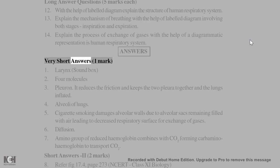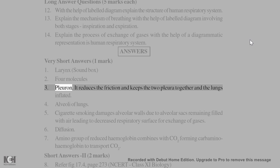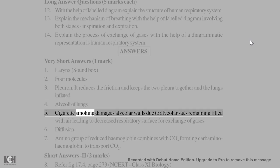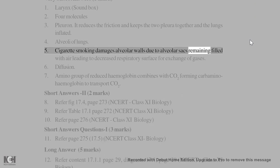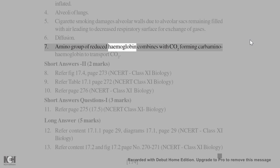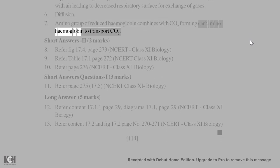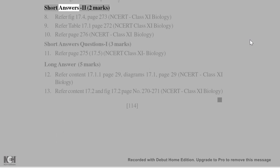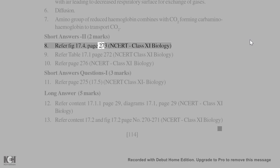Answers — Very Short Answers (1 mark): 1. Larynx (sound box). 2. Four molecules. 3. Pleura — it reduces friction and keeps the two pleural layers together and the lungs inflated. 4. Alveoli of lungs. 5. Cigarette smoking damages alveolar walls, causing alveolar sacs to remain filled with air, leading to decreased respiratory surface for gas exchange. 6. Diffusion. 7. The amino group of reduced hemoglobin combines with CO2 forming carbaminohemoglobin to transport CO2. Short Answers (2 marks): 8. Refer to Figure 17.4, page 200.